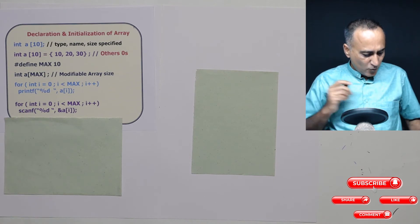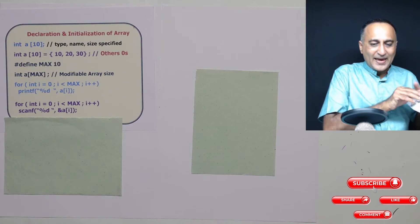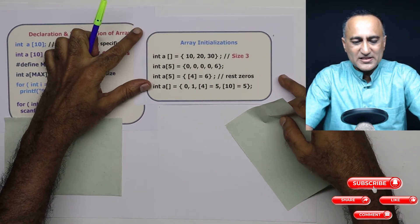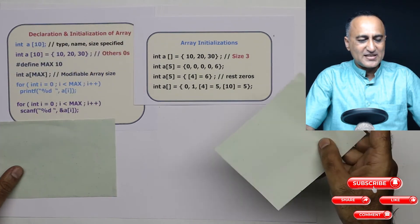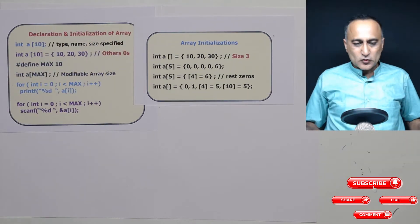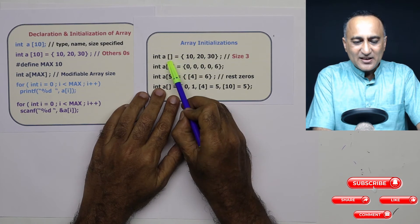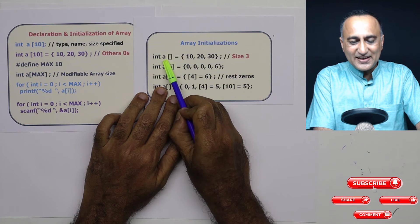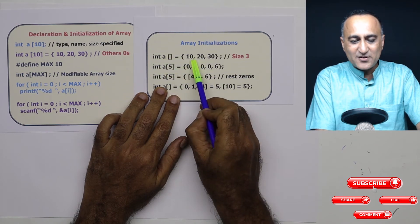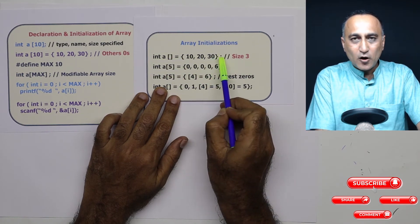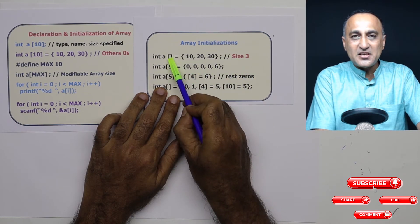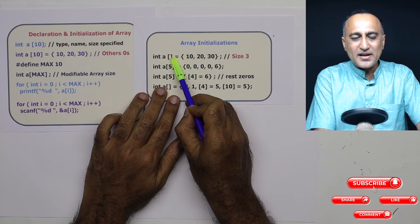Let's take a look at a few more initialization of array elements. So this is one more example of initializing an array. In the first case, here if you see, I have not declared the size of array. So if I do something like this, int a without specifying the size, if I do 10, 20, 30, automatically the compiler will create the size of the array as three places.